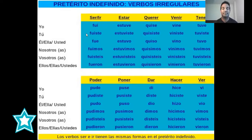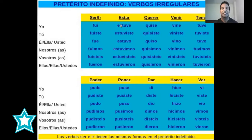Yo fui, tú fuiste, él fue, nosotros fuimos, vosotros fuisteis, ellos fueron. Ser, ir — to be, to go — in the past tense. I went, you went, and so on. Or: I was, you were, and so on.